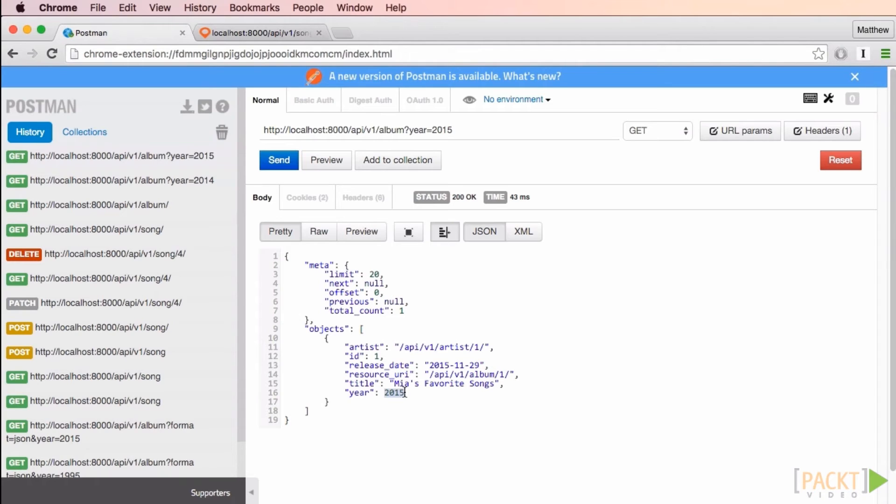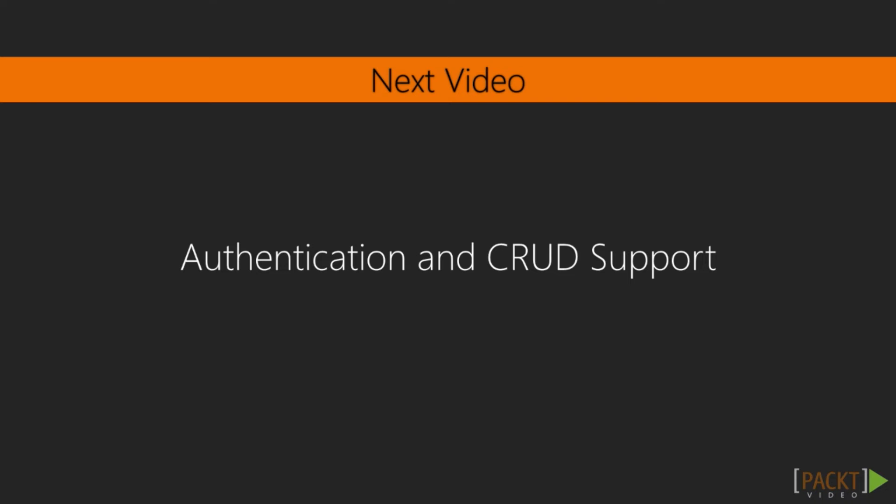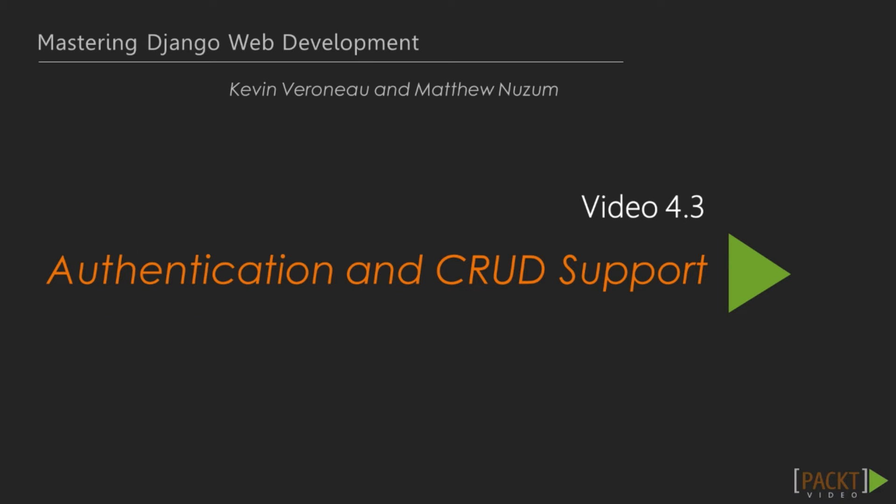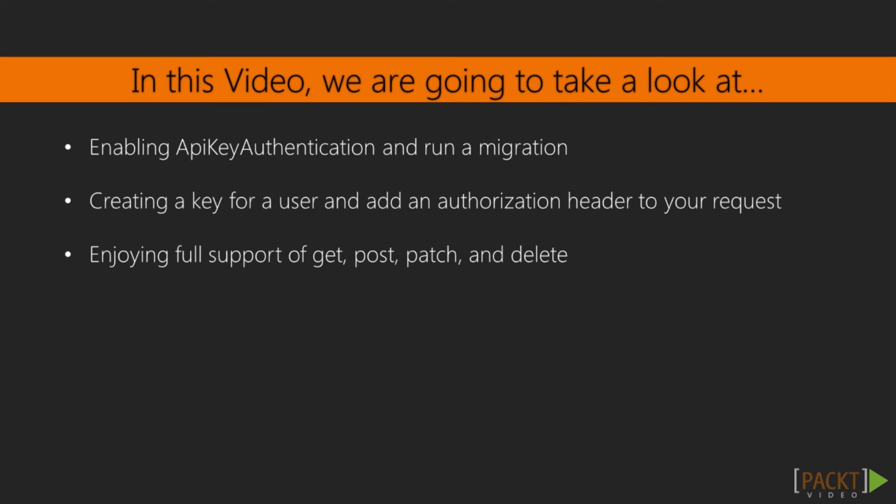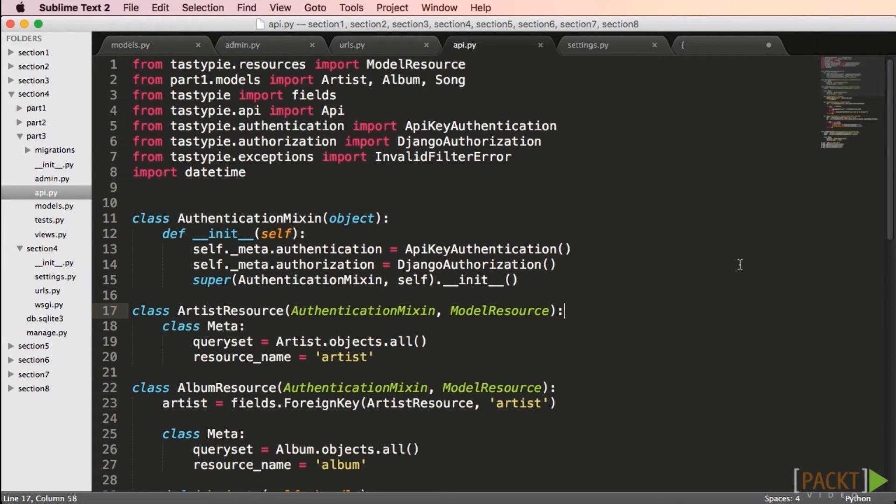If I chose a past year, I see no results, but if I choose 2015 I do get the album released that year. At this point you have the tools you need to do just about everything with a read-only API. In the next video, we're going to add authentication so that we can allow create, update, and delete support as well. We've built a read-only API, but many would also like CRUD support. This isn't too hard, but we need to be extra cautious because we don't want just anyone to have this capability. TastyPie offers several authentication methods.